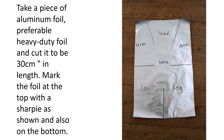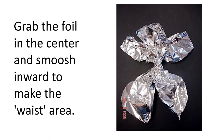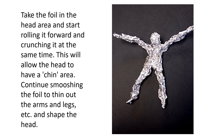Cut slits where marked — two at the top to make the arms and head area, and one at the bottom for the two legs. Grab the foil in the center and smoosh inward to make the waist area. Squeeze together each leg and each arm to make more of a cylinder shape. Take the foil in the head area and start rolling it forward and crunching it at the same time — this will allow the head to have a chin area. Continue smooshing the foil to thin out the arms and legs and shape the head. I know it's a little bit hard at the beginning, but keep on trying your best.